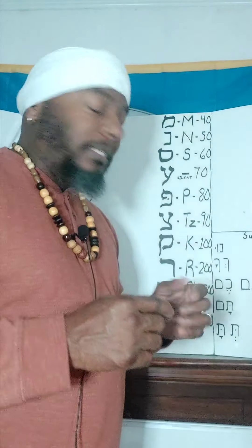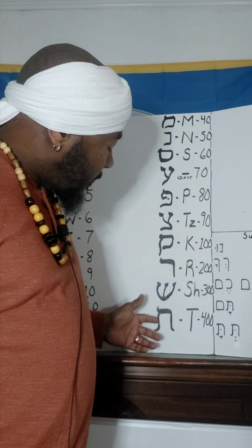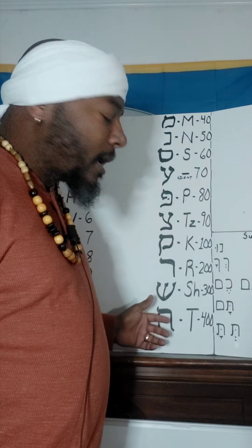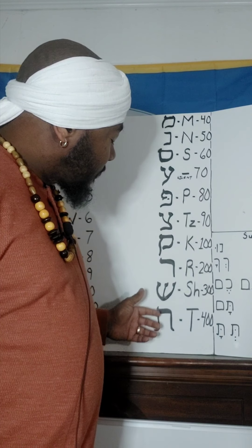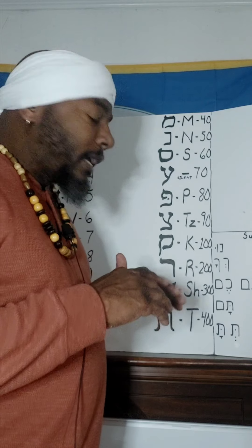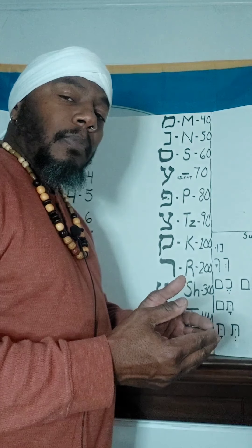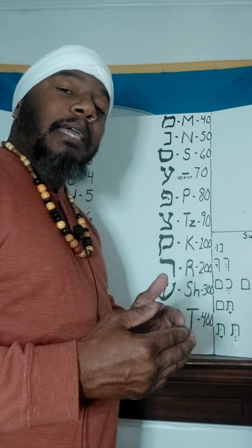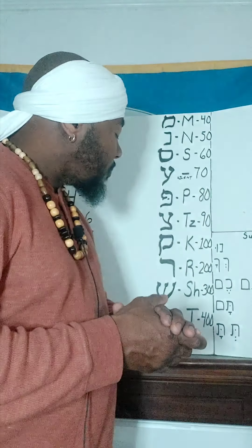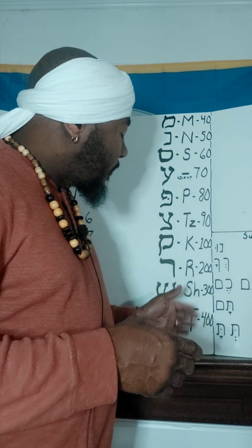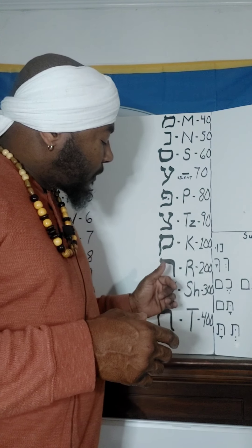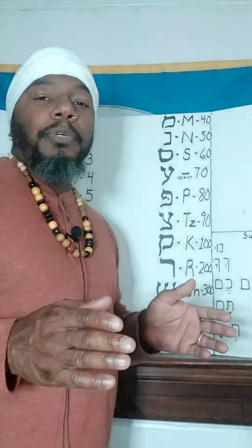Last but not least, this letter here is the Tau. Some people say it carries the T sound and also the TH sound. And the numerical equivalent to the Tau is four hundred.